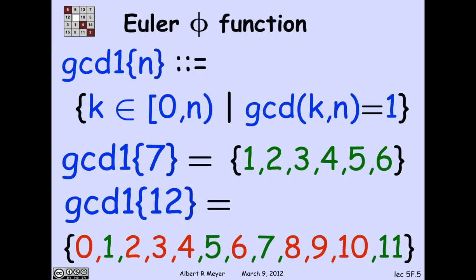GCD1 of 12 is the numbers that have no factor in common with 12. They're the numbers in green below. And the other red numbers do have a prime in common with 12. The pattern here is not so apparent.